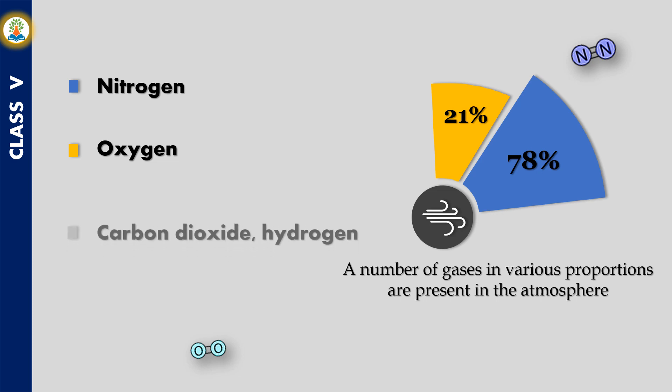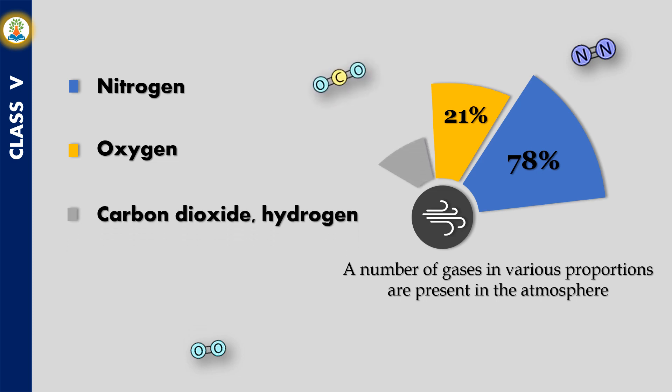Carbon dioxide is one of the most important greenhouse gases linked to global warming, but it is a minor component of Earth's atmosphere. Hydrogen is a colorless, odorless, tasteless, flammable gaseous substance that is the simplest member of the family of chemical elements. Both are found in traces.